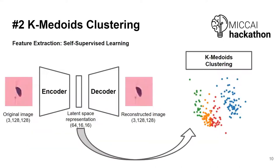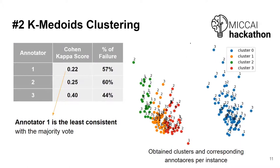As a second approach, we employed K-medoids clustering. First, we extract latent features from the original images using an autoencoder, then apply K-medoids clustering. In each cluster, the cluster annotation is determined by the majority of annotations from samples within that cluster. With this method, we observed that the first annotator is the least consistent.